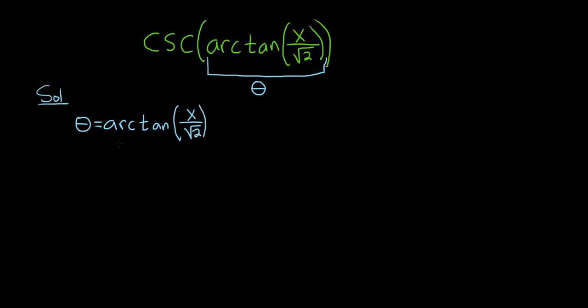Then you use the fact that the arc tangent is the inverse tangent. So the arc tangent takes x over the square root of 2 and sends it to theta. This means that the tangent function takes theta and sends it back to x over the square root of 2. So they're inverse functions, so they undo each other.